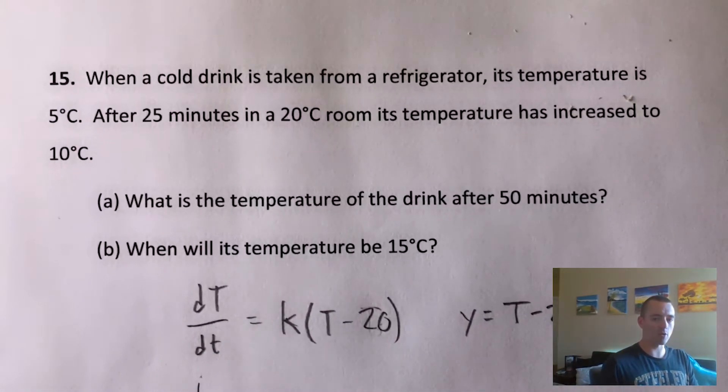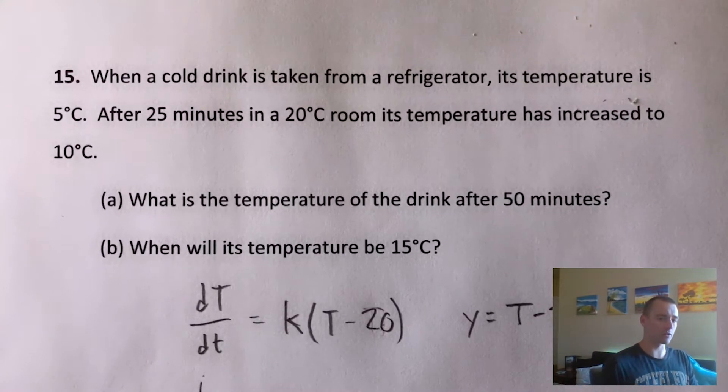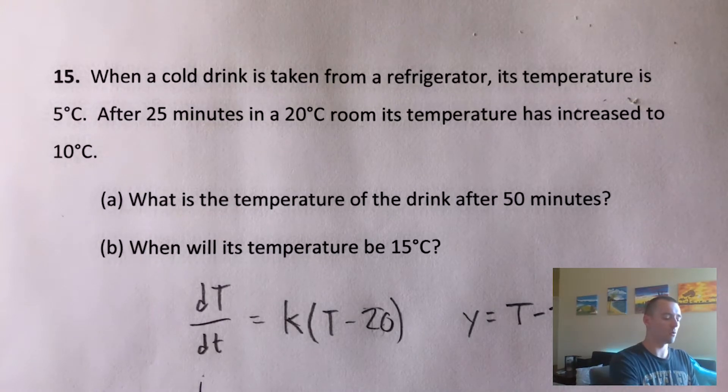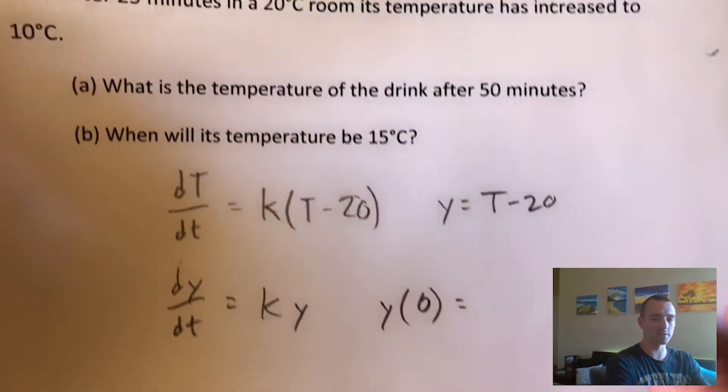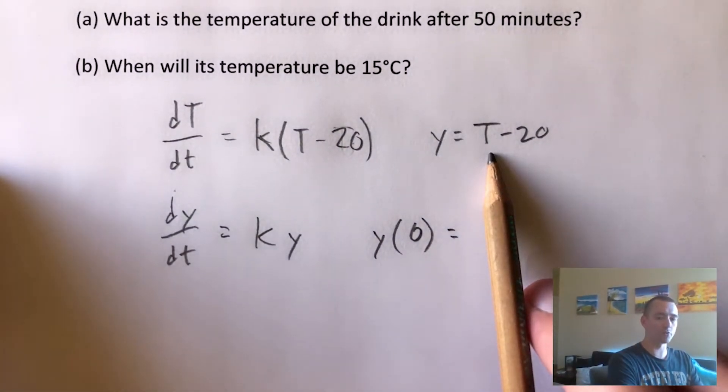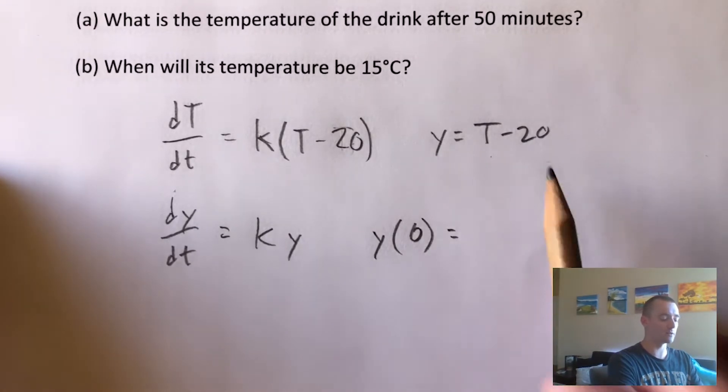So remember, when the drink is taken out of the refrigerator, it is five degrees. So what that tells us basically is the initial temperature of the drink is five. So what we want to do to figure out what y is at that initial time when it's taken out of the refrigerator, is to plug in five degrees for our temperature here.